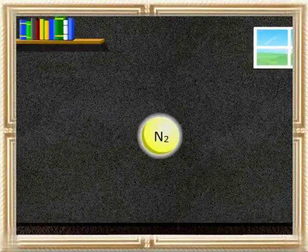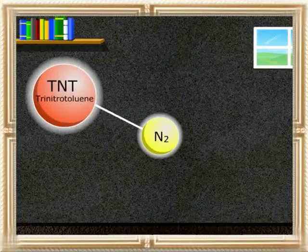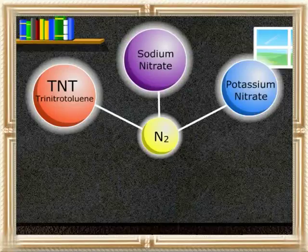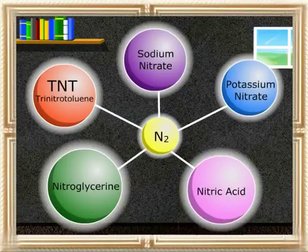Nitrogen is also used in the manufacturing of explosives like TNT (trinitrotoluene), sodium nitrate, potassium nitrate, and nitroglycerine. Nitrogen is also used in the manufacturing of nitric acid.